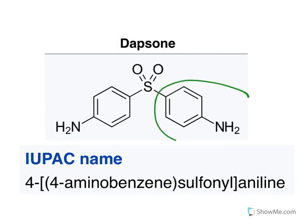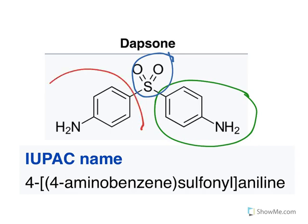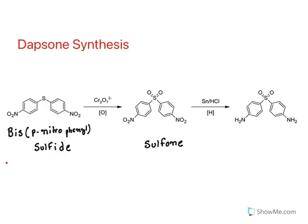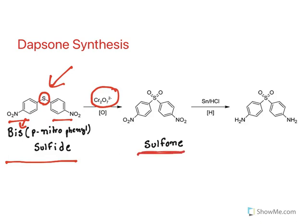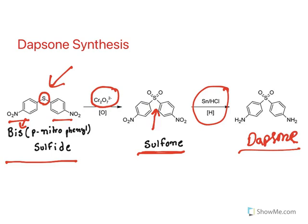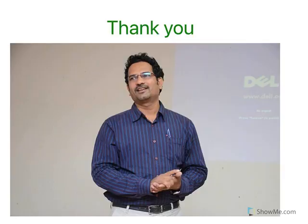Dapsone structure: one part is 4-aminobenzene, connected via a sulfonyl group to aniline. For synthesis, bis(para-nitrophenyl) sulfide is used — two nitrophenyl groups, hence 'bis.' It is oxidized in the presence of chromic acid to give the bis(para-nitrophenyl) sulfone derivative, which is then reduced to yield dapsone. This is the simplest synthesis. This concludes the unit 4 lecture on sulfonamides and sulfones — please subscribe and share.